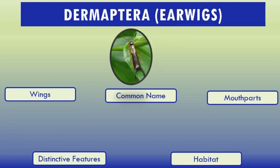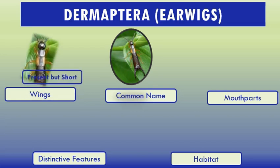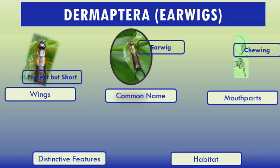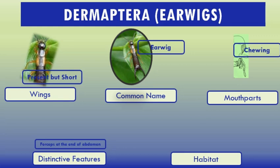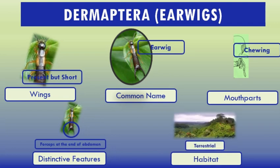Common characteristics of Dermaptera earwigs: wings present but short, common name earwigs, mouthparts chewing. Distinctive features: forceps at the end of the abdomen, which you can see very clearly in the image. Habitat: terrestrial.